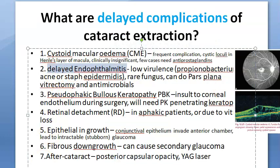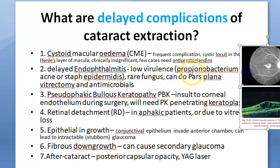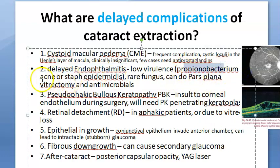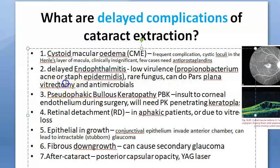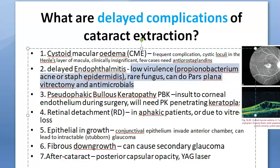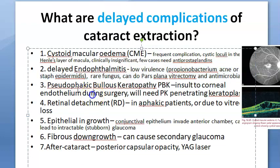Delayed endophthalmitis can also occur — in contrast to early endophthalmitis, this is usually due to low-virulence organisms like Propionibacterium acnes or Staphylococcus epidermidis, and rarely due to fungus. Treatment includes antibiotics or a pars plana vitrectomy with antibacterial or antifungal agents based on the causative organism.